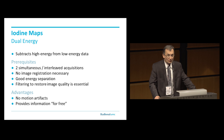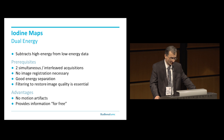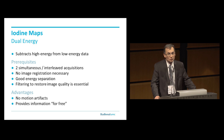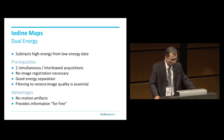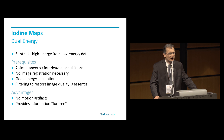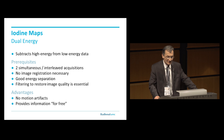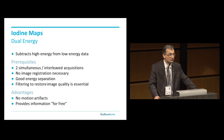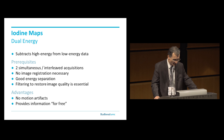As you all know, it subtracts high energy from low energy data and does quite a bit of normalization to get rid of beam hardening effects. What you do is usually take two simultaneous or interleaved acquisitions, which basically means that there is no image registration necessary. You need a good image separation in terms of energy, and that should be as high as possible. And ultimately, because the images are extremely noisy, you need to have good filtering to restore image quality.